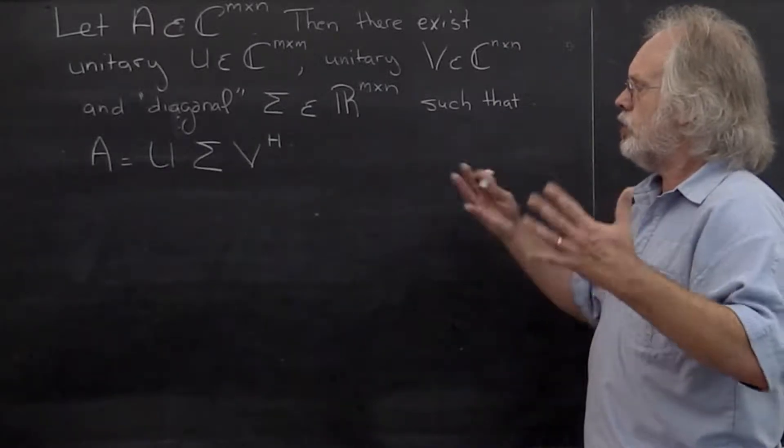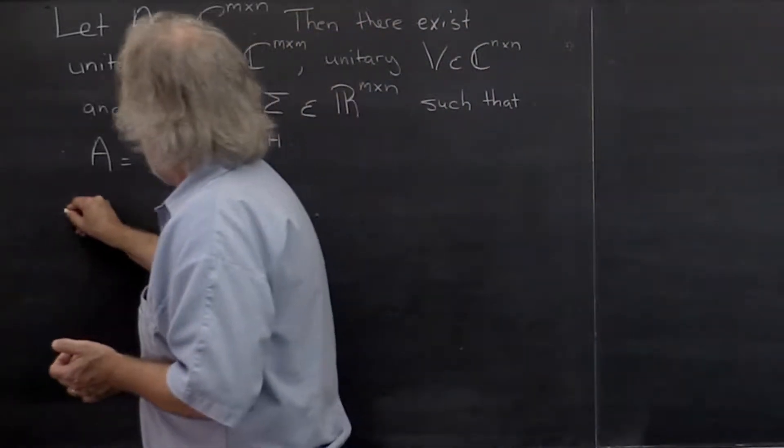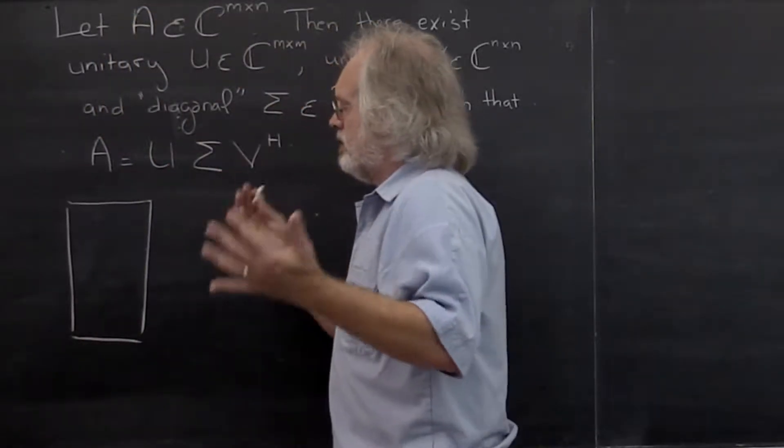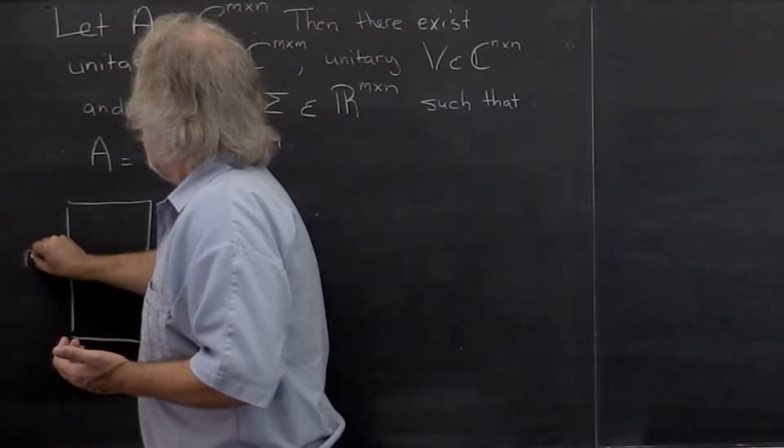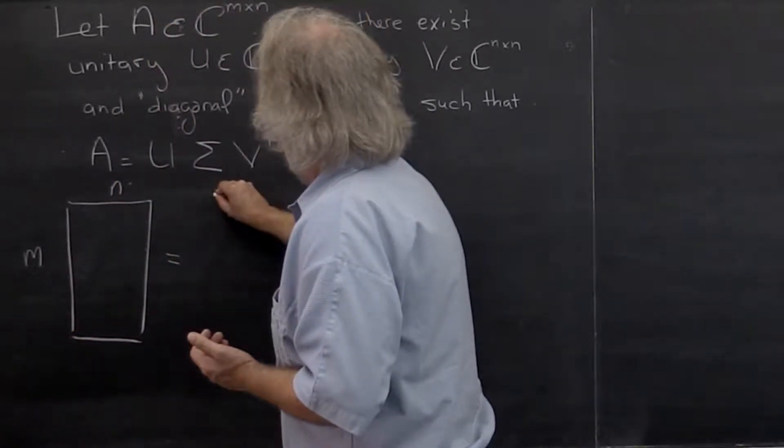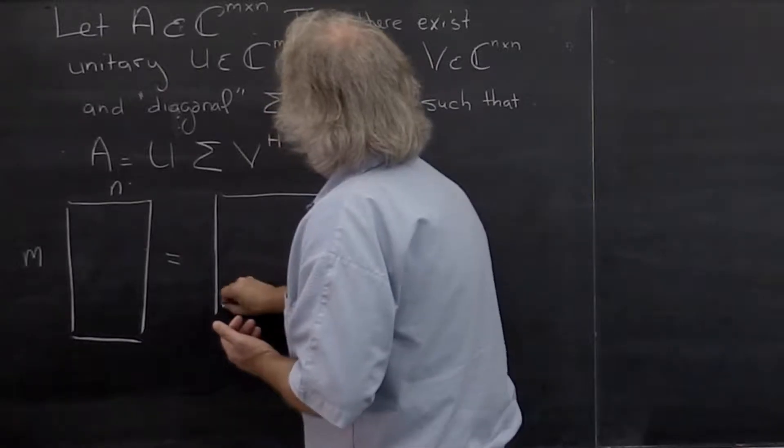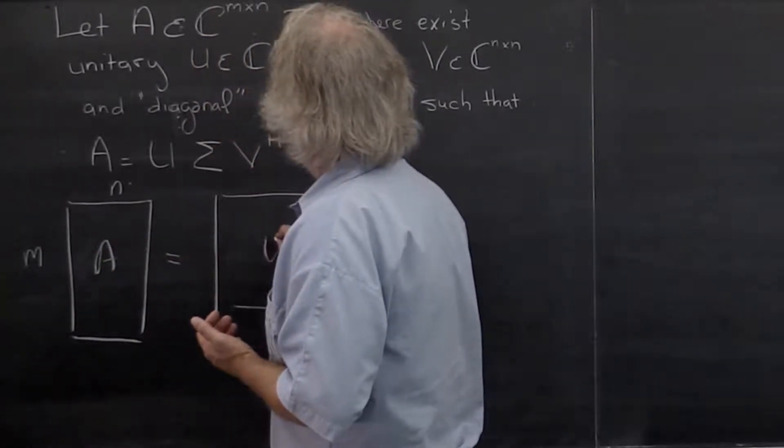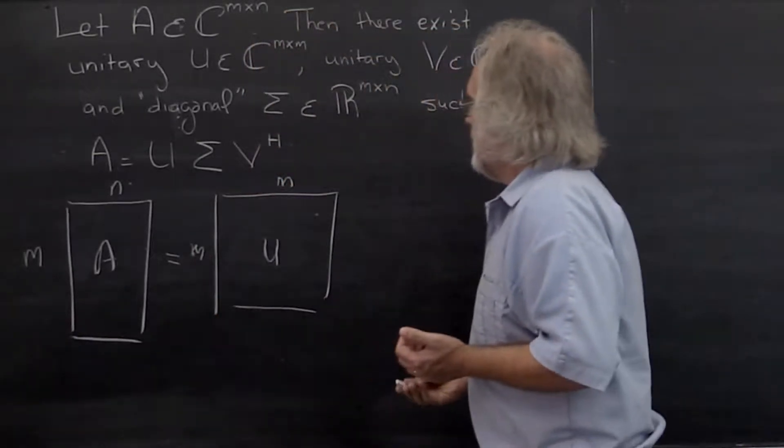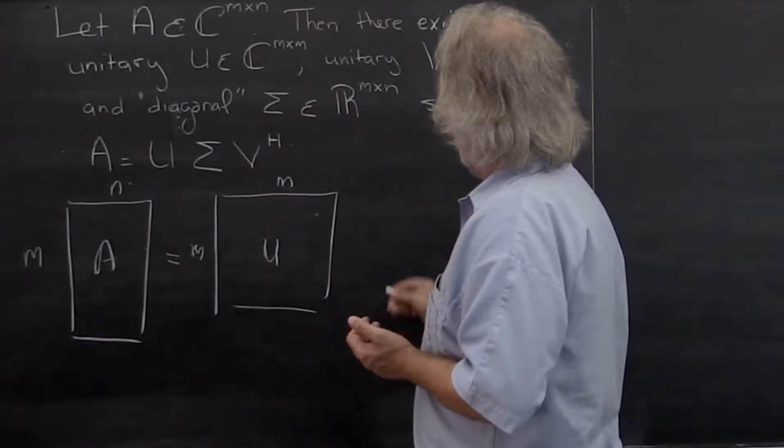So how should we actually look at this? Matrix A is some rectangular matrix. And for now let's just say that m is greater than or equal to n. Then you end up with a unitary matrix U. This is matrix A. This is U, which is m by m.